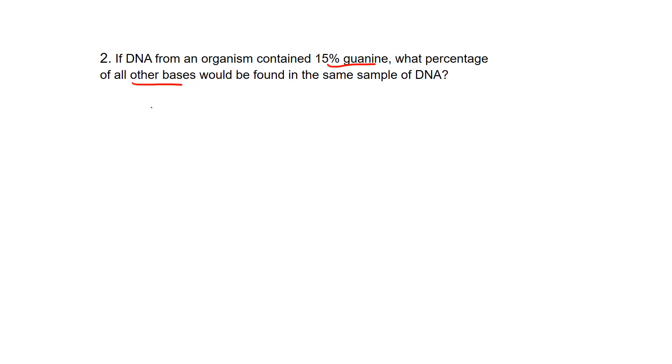We can work this out really quickly because we know guanine and cytosine always pair together. If there's 15% of guanine, there has to be 15% of cytosine because they're bonded together in that double helix molecule.